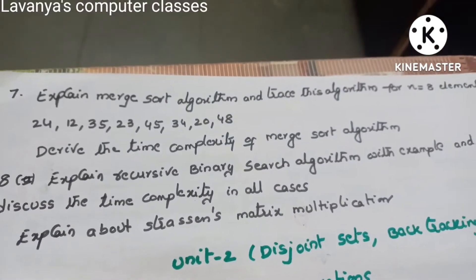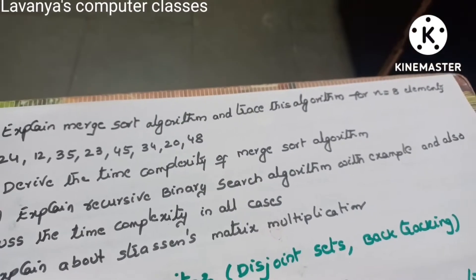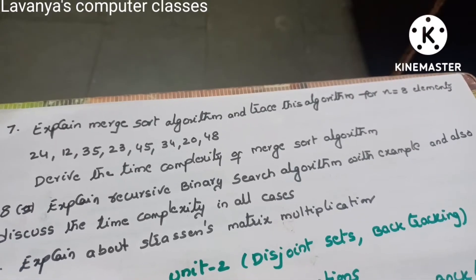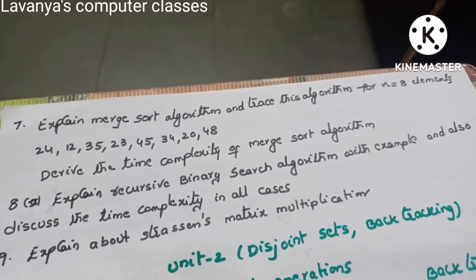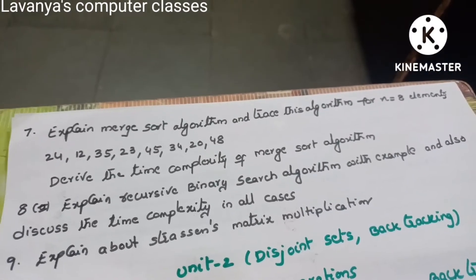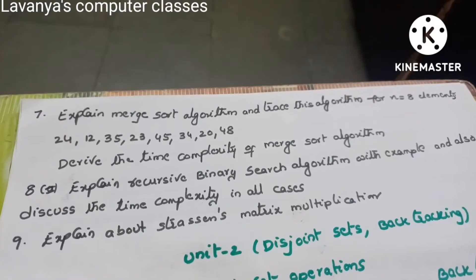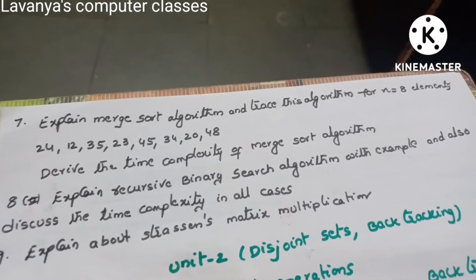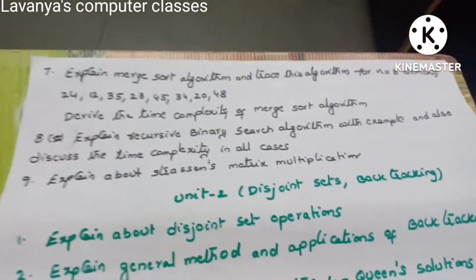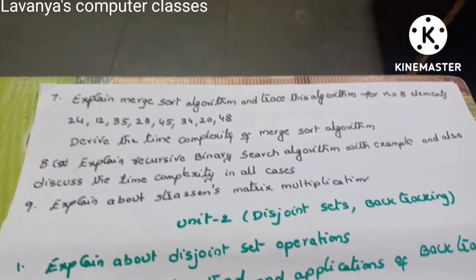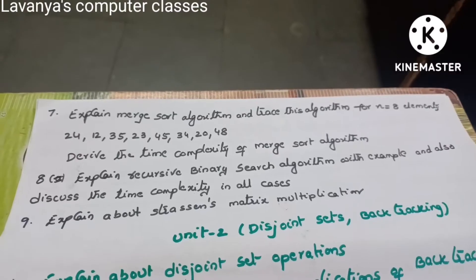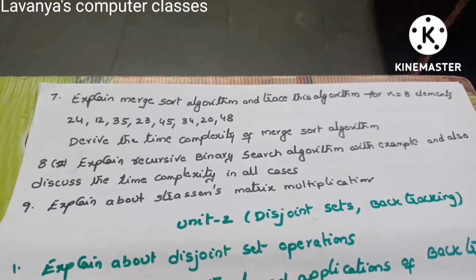Question 7: Explain the mergesort algorithm and trace the algorithm for n=8 with elements 24, 12, 35, 23, 45, 34, 20, 48. Practice for any numbers — how to use the mergesort algorithm — and also derive the time complexity. Question 8: Explain the recursive binary search algorithm with an example and discuss the time complexity in all cases. Question 9: Explain Strassen's matrix multiplication. These are the questions in Unit 1.